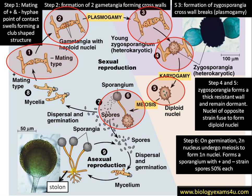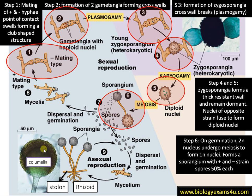A sporangium is formed at the tip. Numerous nuclei along with dense protoplasm move to this site and transform into spores. The periphery of the sporangium forms the spore-containing region, and inner to that is a region called the columella — a sterile region that supports the sporangium and transports food to the developing spores. On breakage of the sporangial wall, spores are released and germinate to form new mycelium.